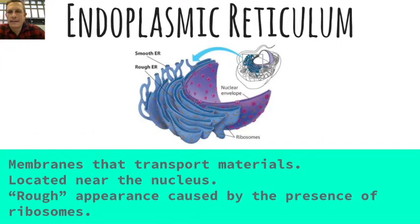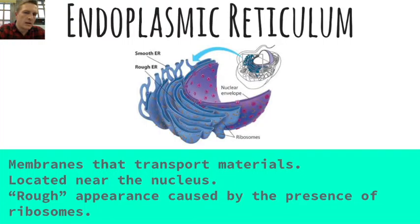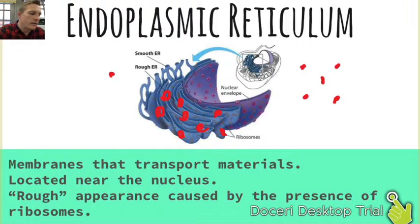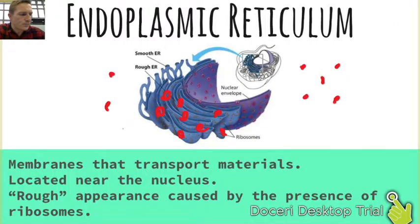The endoplasmic reticulum is that funny-shaped structure usually found near the nucleus. It's a network of membranes that transport materials away from the nucleus and throughout the cell. The rough endoplasmic reticulum has a rough appearance because it is speckled with tiny ribosomes and is usually the site where proteins are built. Ribosomes can be found free-floating in the cytoplasm, but also on the rough endoplasmic reticulum. The smooth endoplasmic reticulum is in charge of making fats, oils, waxes, and other lipids. The key function is transport of materials throughout the cell.